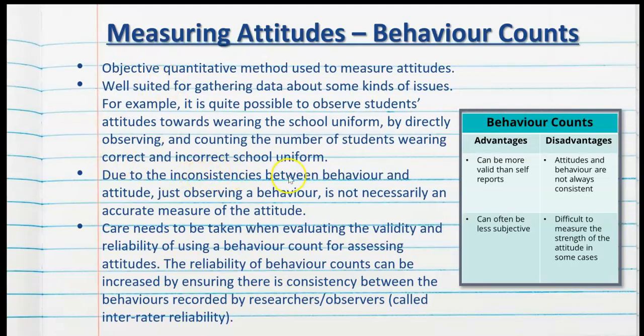Due to the inconsistencies between attitudes and behavior, just observing a behavior is not necessarily an accurate measure of the attitude, so care needs to be taken when evaluating the validity and reliability of using a behavior count for assessing attitudes. The reliability of behavior counts can be increased by ensuring there is consistency between the behaviors recorded by the researchers and observers — this is called interrater reliability — making sure that the same behaviors and the same extent of behaviors are consistent across all researchers.